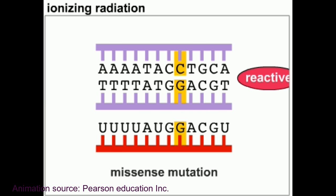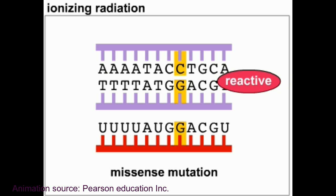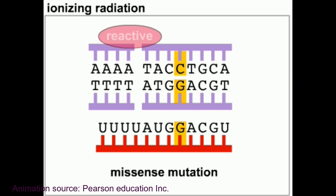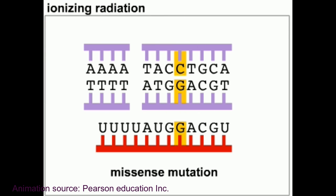Even more seriously, free radicals can react with the sugar-phosphate backbone of DNA, causing breaks in the chromosome.